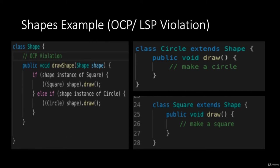Let's see how LSP is being violated. If we have a third subclass called Triangle and the client passes a Triangle object to the drawShape method, the client expects a triangle on screen, but nothing happens. This means the Triangle subclass is not substitutable in place of Shape, which is the base class — thus violating the Liskov Substitution Principle.